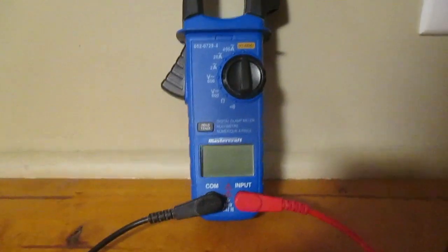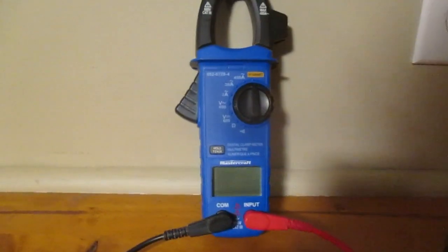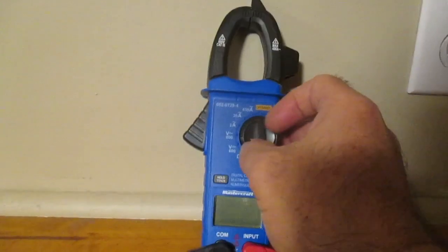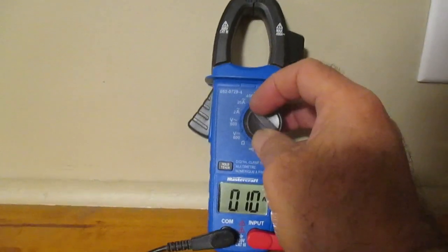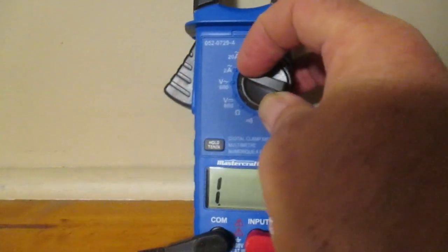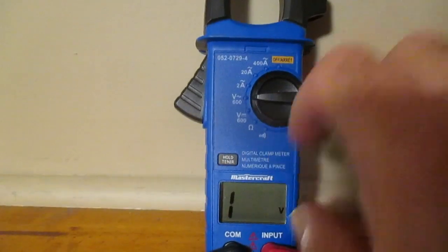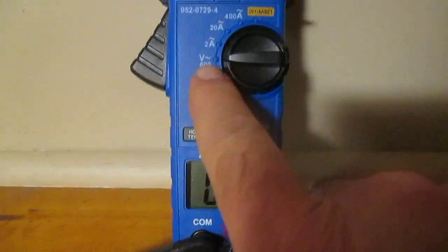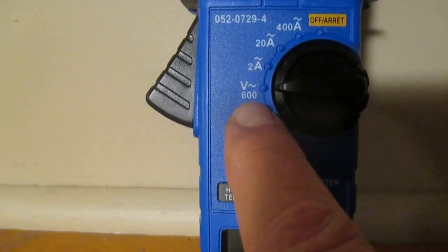Now we're going to measure AC voltage, the voltage that a house is wired. That's alternating current. We flick our switch down to the voltage, the V with the squiggly line there. And we see we can measure up to 600 volts.